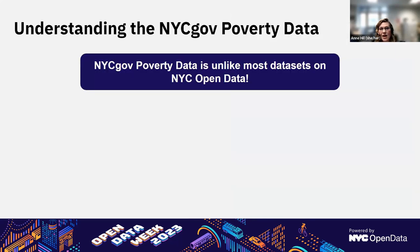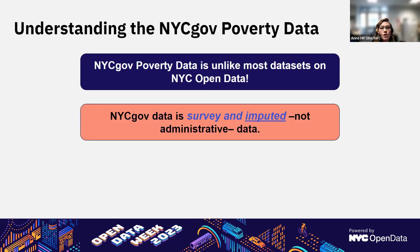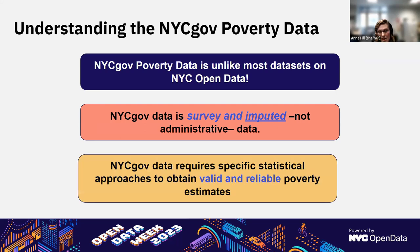A big takeaway about the NYCGov poverty data is that it's unlike a lot of data sets on open data because our data are survey data, not administrative data. Administrative data often directly reflects the topic or population of interest, whereas survey data is a sample that represents a larger whole. Our sample data represent a larger New York City population. Also, many of our variables and poverty components are imputed, meaning that we estimate benefit receipt or the value of participating in programs like SNAP, school meals, or housing subsidies. Working with our data requires specific analytical approaches that vary depending on your research question.